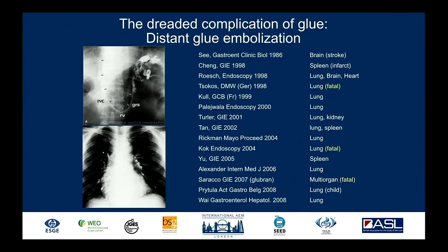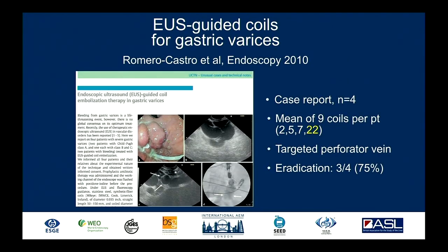The rationale was inspired by what we all fear with cyanoacrylate injection: glue embolization. There's a long list of complications from embolization and a number of deaths — I myself have experienced serious complications including a death. Perhaps we should think about an alternative to avoid embolization. The use of coils, routinely used by radiologists, was first reported also by Rafael in a case report with four patients. A mean of nine coils per patient were used — 22 coils in one patient — targeting the perforator vein as a proof-of-concept study.